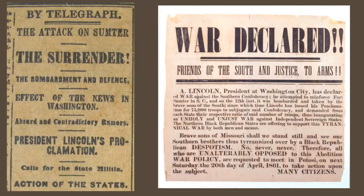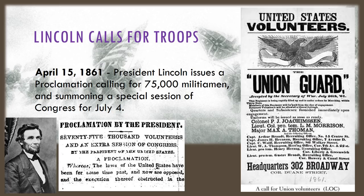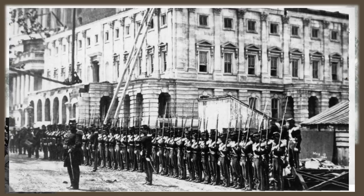The North begins asking men and boys from all of its states willing to fight to join the Union army, and the South does the same asking them to fight and join the Confederacy. On April 15, 1861, Lincoln issues a proclamation calling for 75,000 militiamen to volunteer and head to Washington DC for training and for their marching orders. Lincoln also summons a special session of Congress to meet on July 4th. Before long, the streets of Washington DC begin to fill as thousands respond to the call and come to join the army.